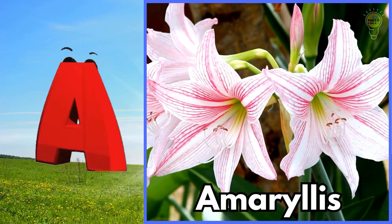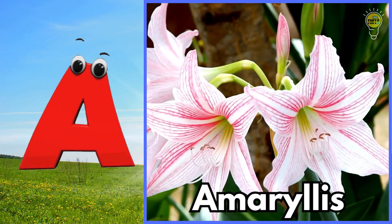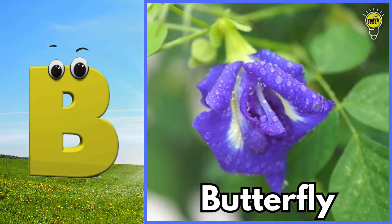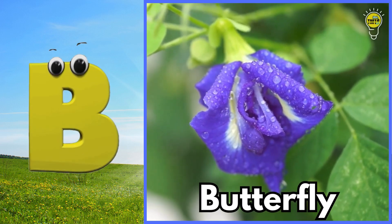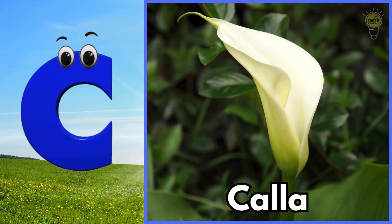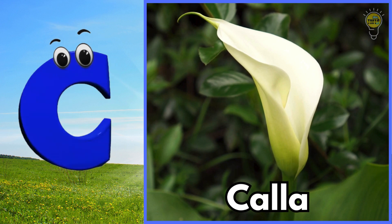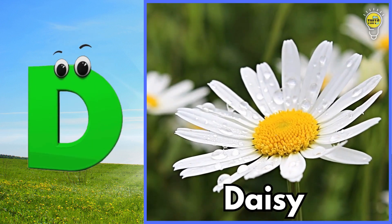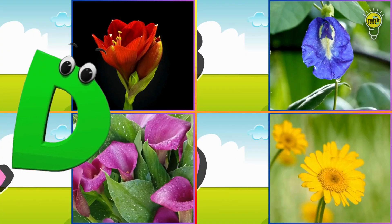A is for amaryllis flower, amaryllis flower. B is for butterfly pea flower, butterfly pea flower. C is for calla lily flower, calla lily flower. D is for daisy flower, daisy flower.